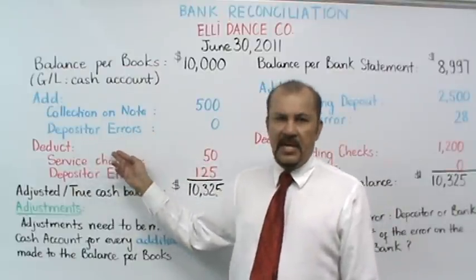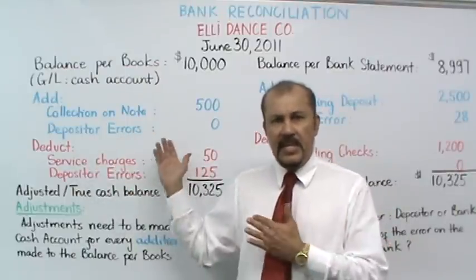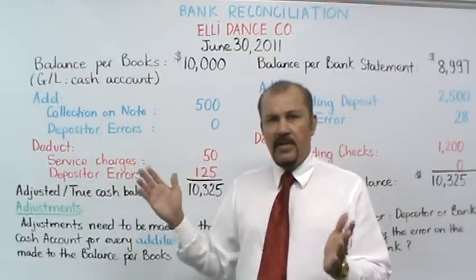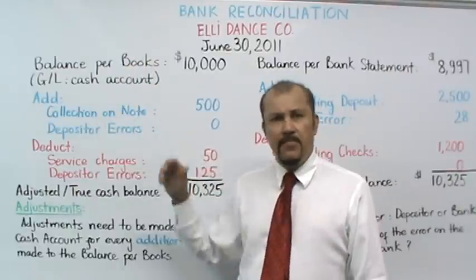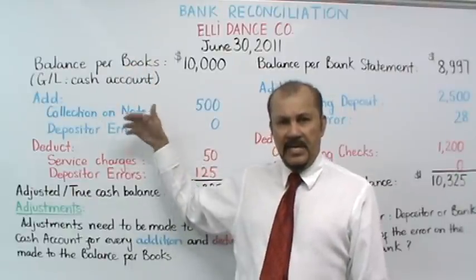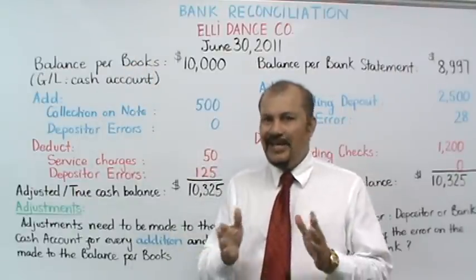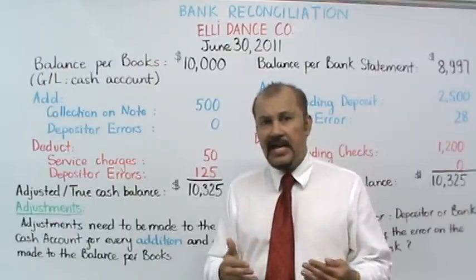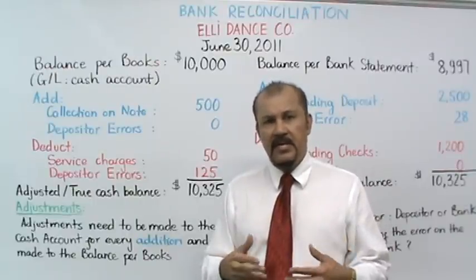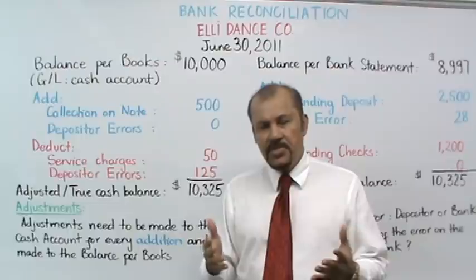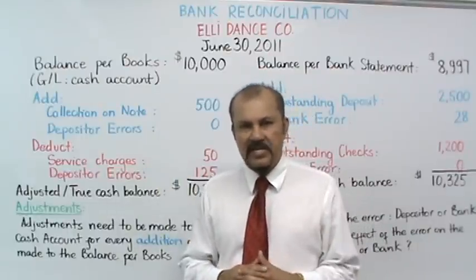Next, depositor error. In this example, there are no depositor errors that affect the book balance in terms of any additions. Later on in the discussion, I will give you some guidelines to help you understand errors and how to handle them from a bank reconciliation perspective.